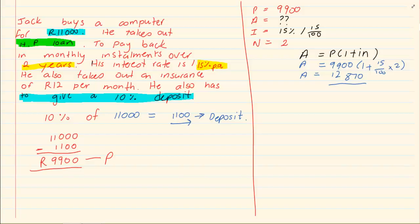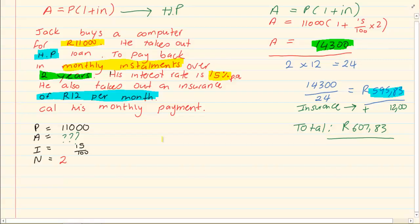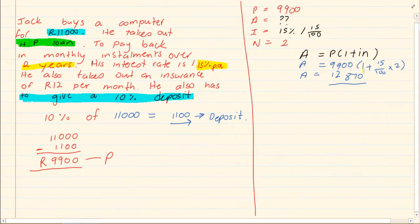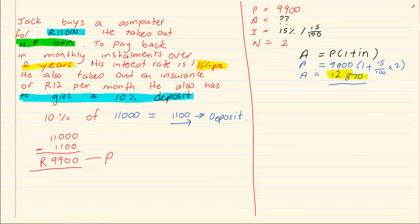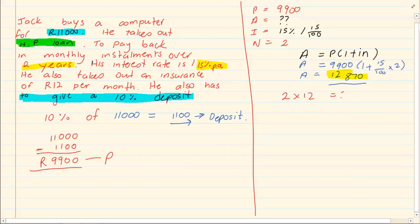If you look at the first question, they specifically want his monthly payment. Now going back to the style of the question, we know that the amount is 12,870 Rand, but he is going to pay it over 2 years. So we are going to say 2 times 12 which is equal to 24.